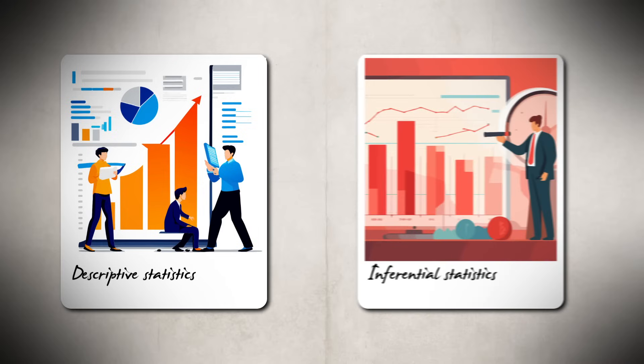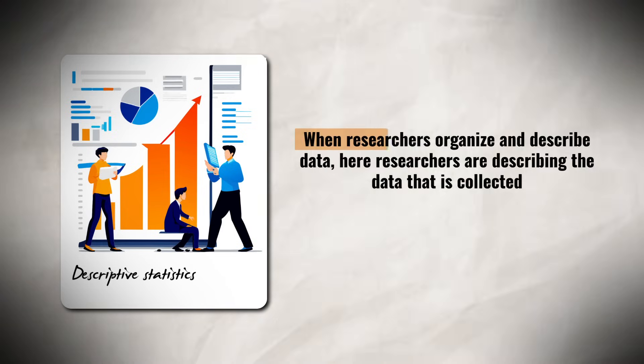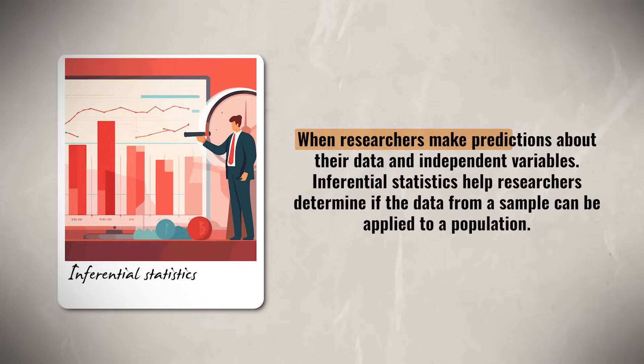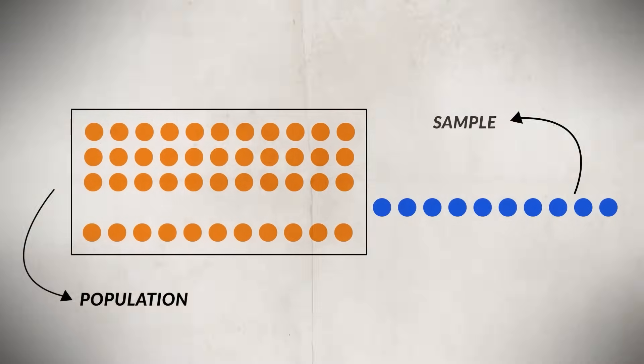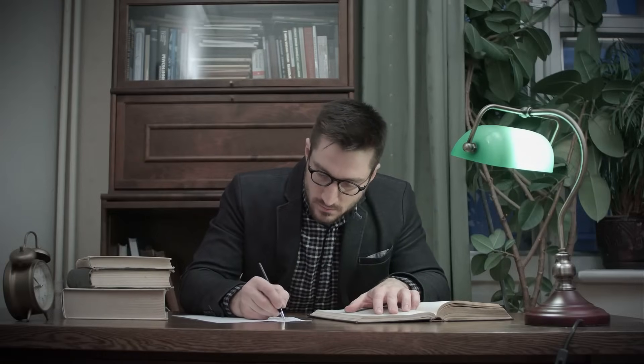So when looking at data, we need to understand the difference between descriptive statistics and inferential statistics. Descriptive statistics is when researchers organize and describe data. While inferential statistics is when researchers make predictions about their data and the independent variables. Inferential statistics help researchers determine if the data from a sample can be applied to a population. These statistics use techniques to make generalizations about a population based on the sample of data. They help researchers test a hypothesis and provide insight into the results of a study to help determine if there was bias in the study or if the results are statistically significant.